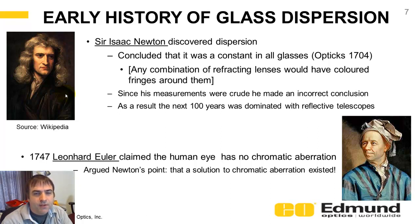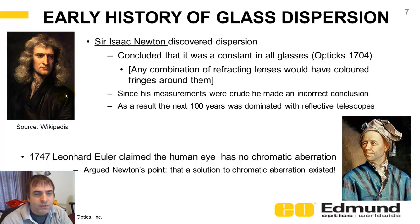Sir Isaac Newton was really the first person to describe how wedge glass can disperse light. He wrote about it in 1704 in his paper Optics. Because his measuring instruments were rather crude, he came to some faulty conclusions — that no matter what glass you have, it's going to have a constant dispersion. That led him to conclude that any combination of lenses will have color fringes, meaning you can't correct for axial color.